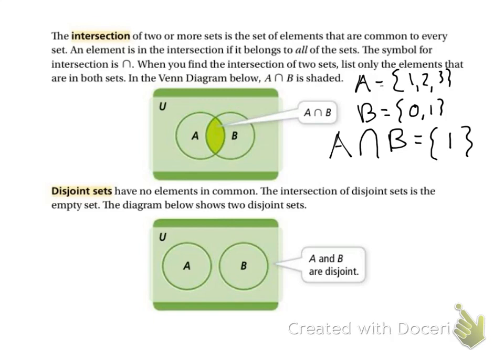And our last vocab word, disjoint sets are sets that have no elements in common. So if A was 2, 4, 6, and B was 1, 3, 5, they don't have any numbers in common.